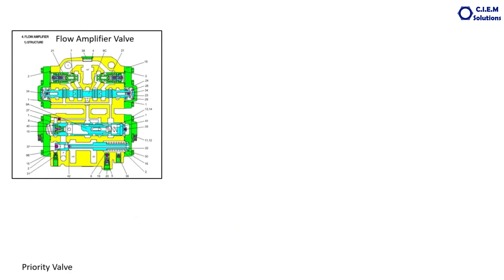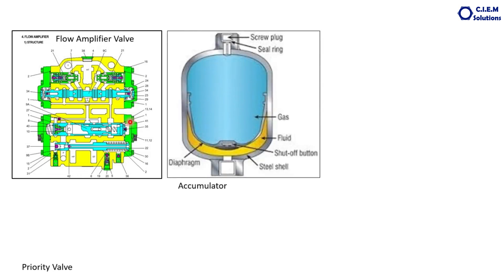There are some additional valves in the system. There is a flow amplifier valve between the orbital valve and the cylinders. The function of the flow amplifier valve is to amplify the system pressure to multiple levels. There is also an accumulator valve located between the main pump and the orbital valve.